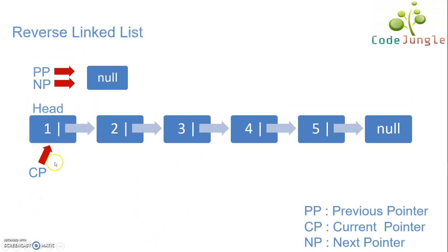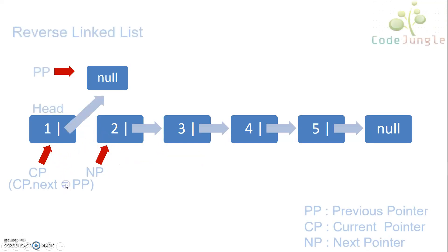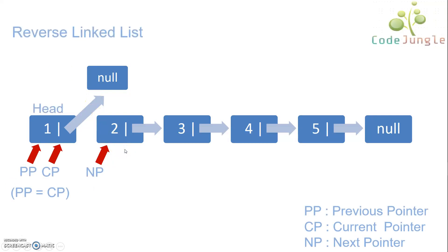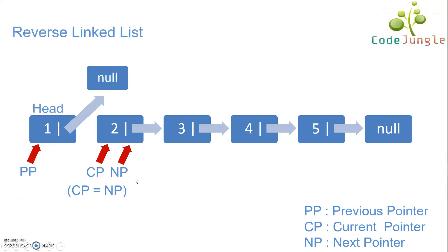In the first iteration, as current pointer is not equal to null, the next pointer will point to the current pointer's next node. Current pointer's next will point to the previous pointer, which is null. Then previous pointer will be current pointer and current pointer will be next pointer. As a conclusion after the first iteration, the first node is no more pointing to the second node and is now pointing to null.